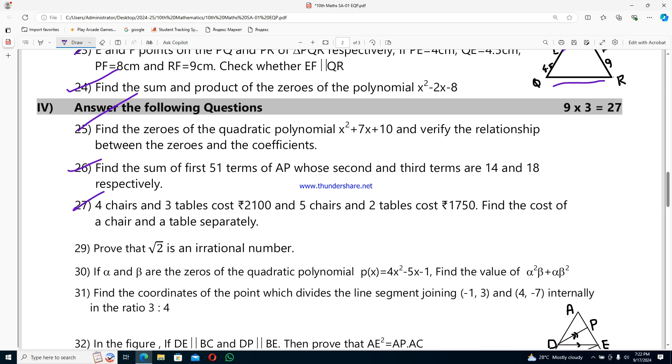Question 26: find the sum of first 51 terms of AP whose second and third terms are 14 and 18 respectively. Question 27: four chairs and three tables cost 2100 rupees and five chairs and two tables cost 1750 rupees. Find the cost of a chair and a table separately.